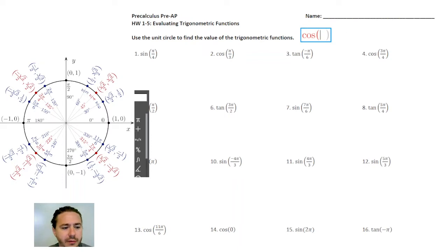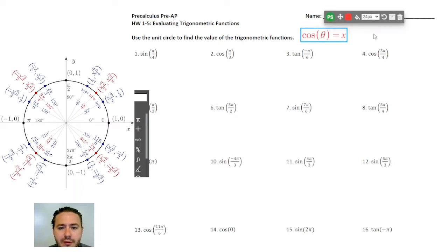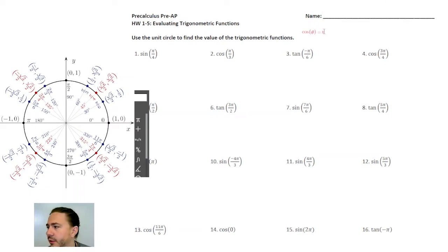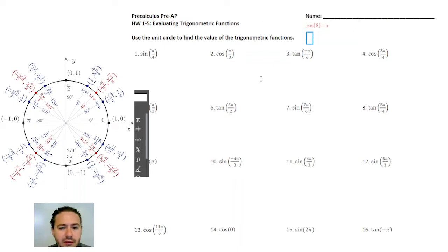Cosine of theta is going to be the x-coordinate on the unit circle. I just want to make a little cheat sheet up here. So cosine of theta is x. Sine of theta is going to be the y.